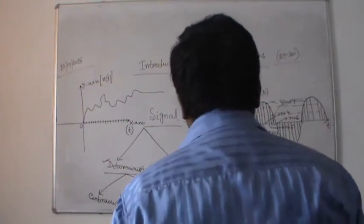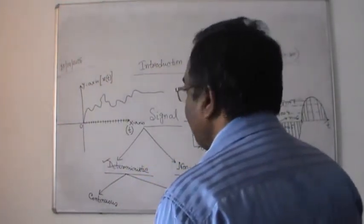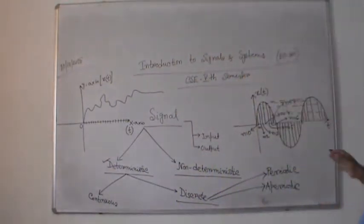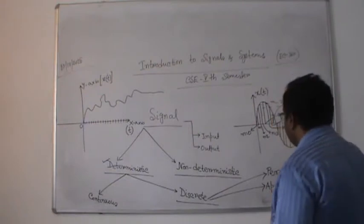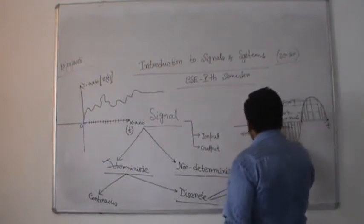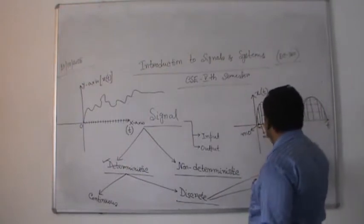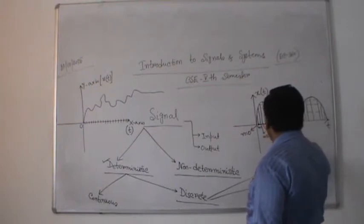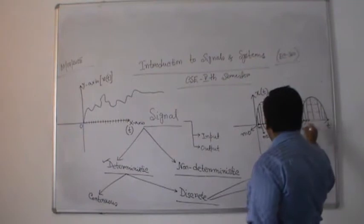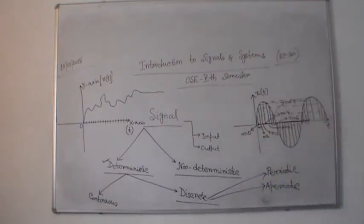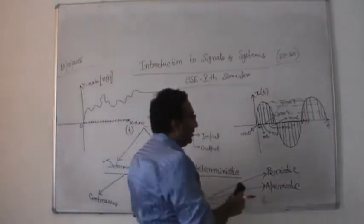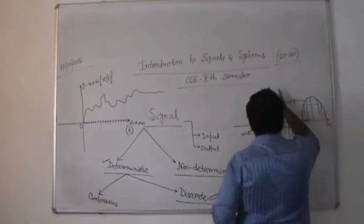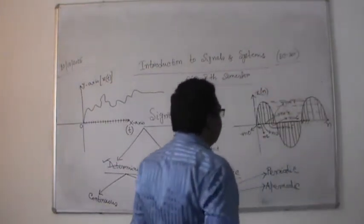Whenever we talk about a continuous periodic signal, there will be a sampling period — the total time after which it will repeat itself. From here to here is one sampling period, and again the next, and again the next — it repeats itself after a certain time. That is the sampling period. The value here is m, and we represent it as x(m) versus m.